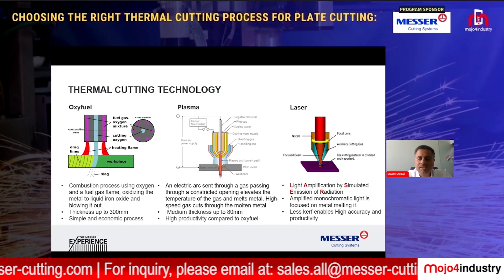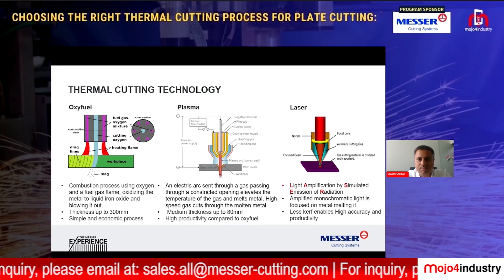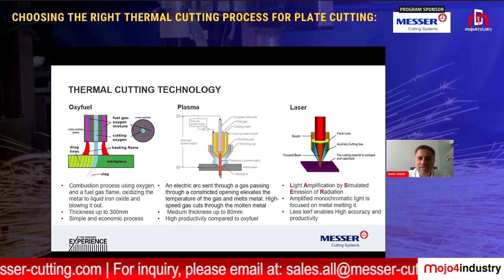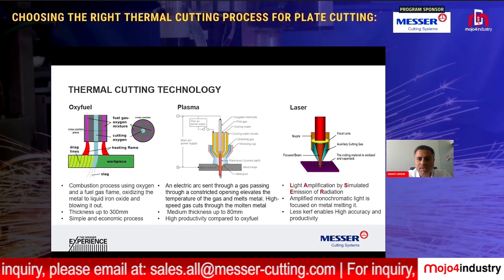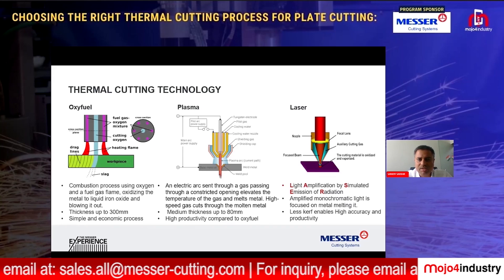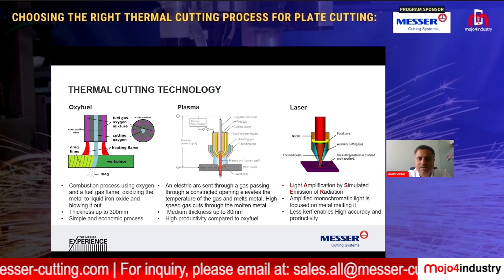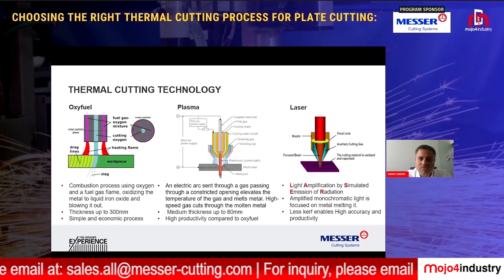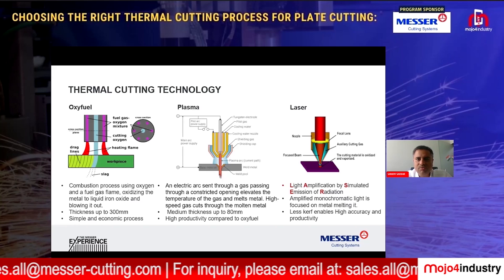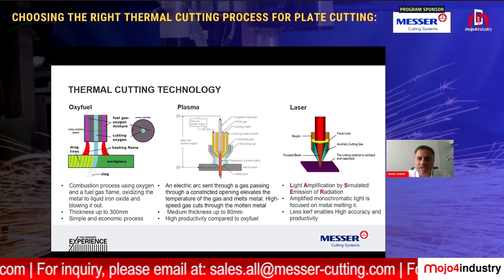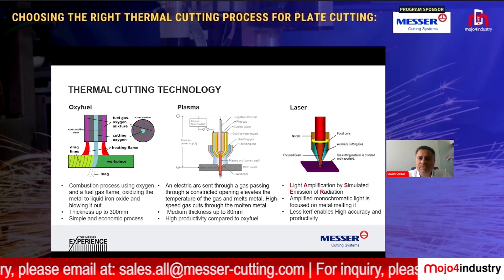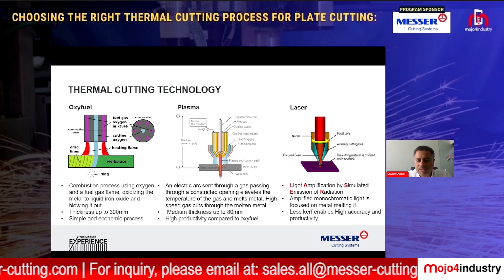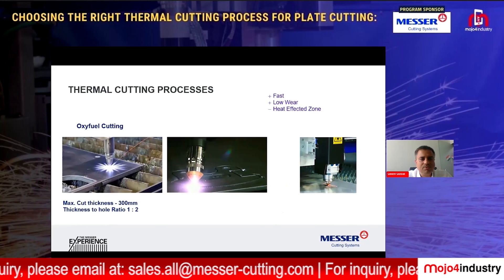Plasma is the fourth state of matter, besides solid, liquid, and gas. In the plasma process, an electric current is passed through a gas through a constricted opening, and the temperature of the gas and the current separate the material. Productivity is high compared to oxyfuel but has some limitations. Laser, as the name suggests, stands for Light Amplification by Stimulated Emission of Radiation — more details will follow in the next slides.